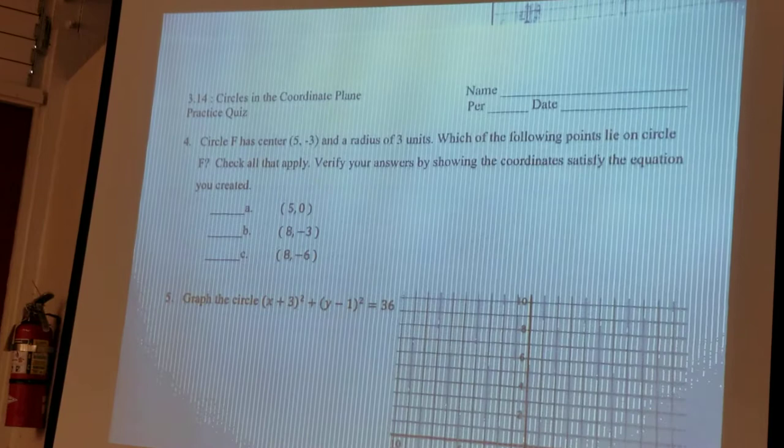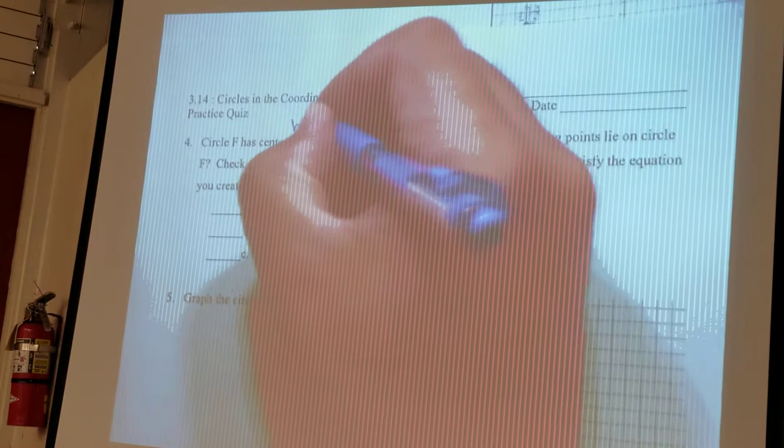Alright, so the idea here is, before you can test anything, you need to make the equation of the circle. So you have a center, 5 and negative 3, and if you remember, the center of your circle is your H and your K.